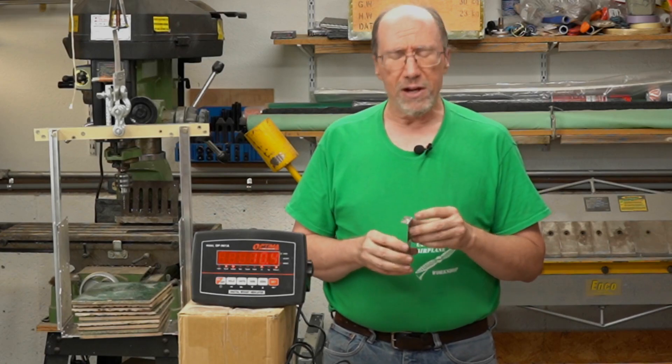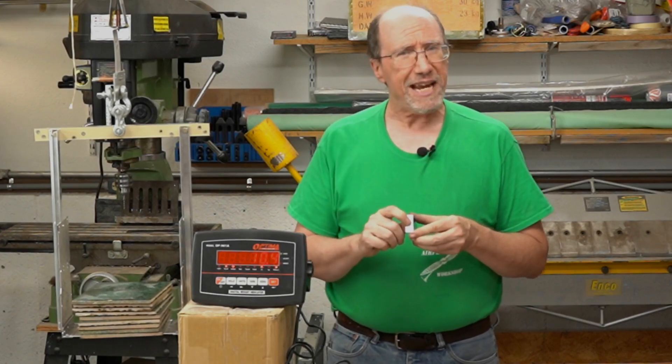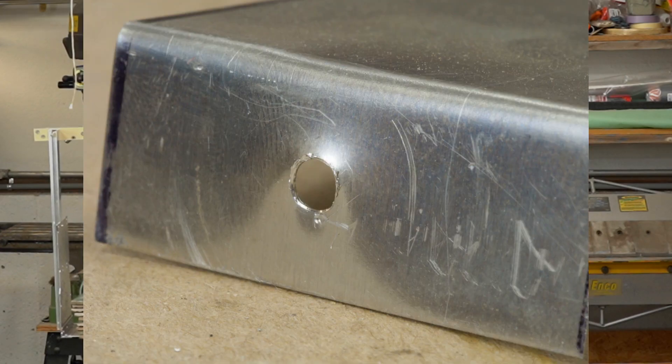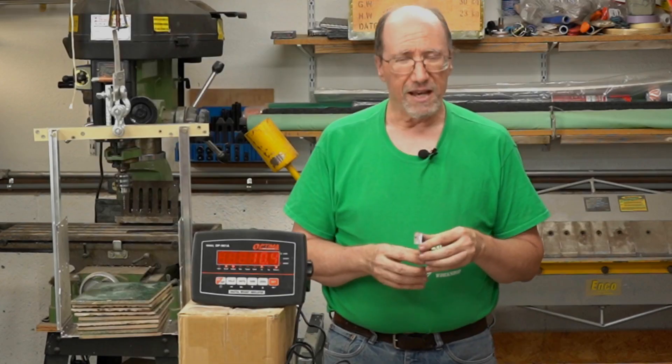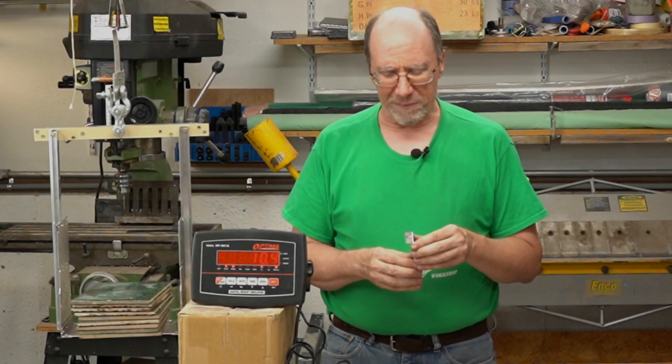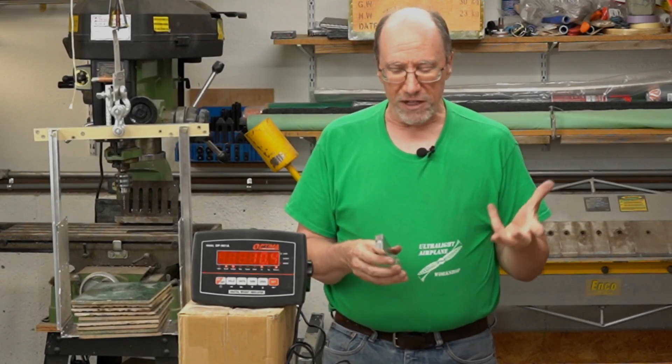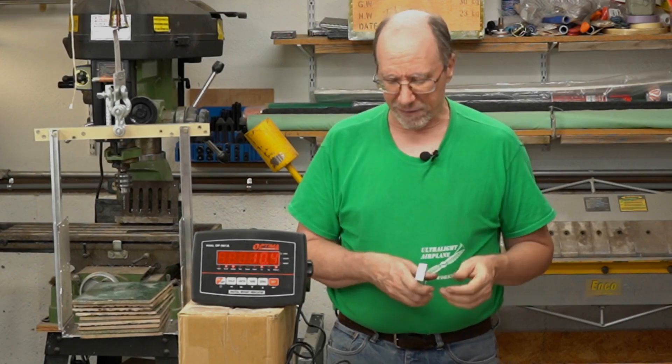But the thing that bothered me the most is that where the rivet came through the flange, that is deformed a lot. And I was not very pleased with that at all. So I really didn't think that was acceptable. So the next thing to do is try to start working towards something that might be acceptable.